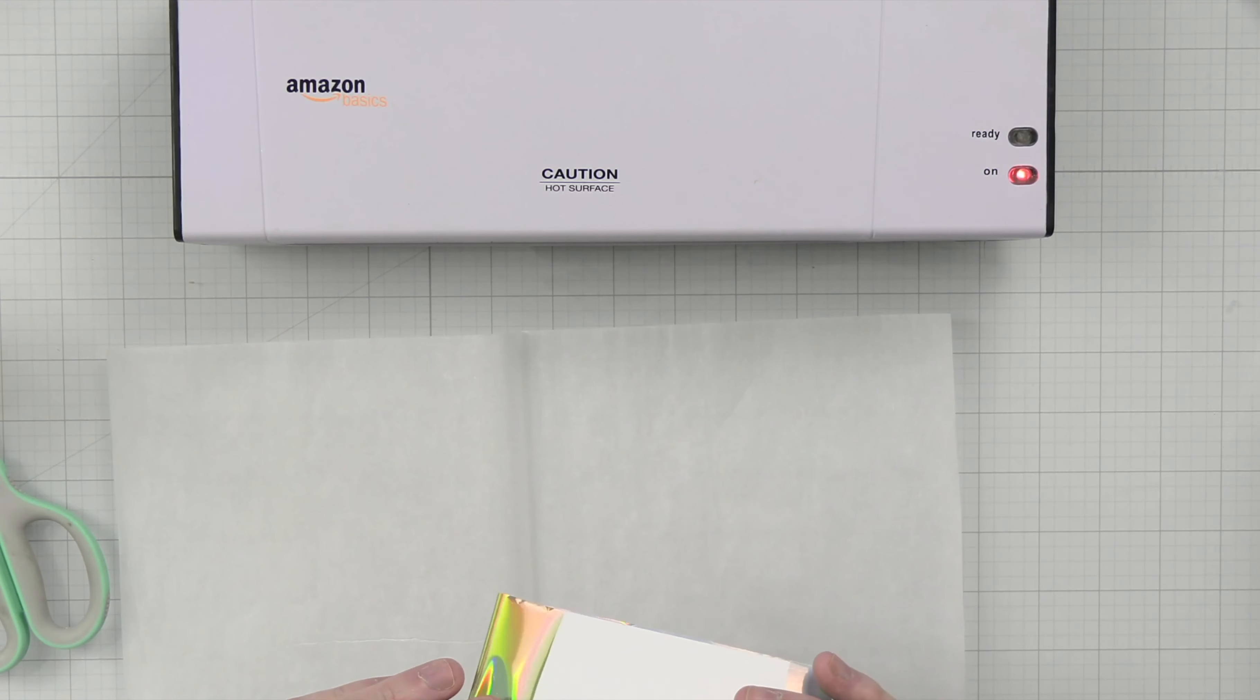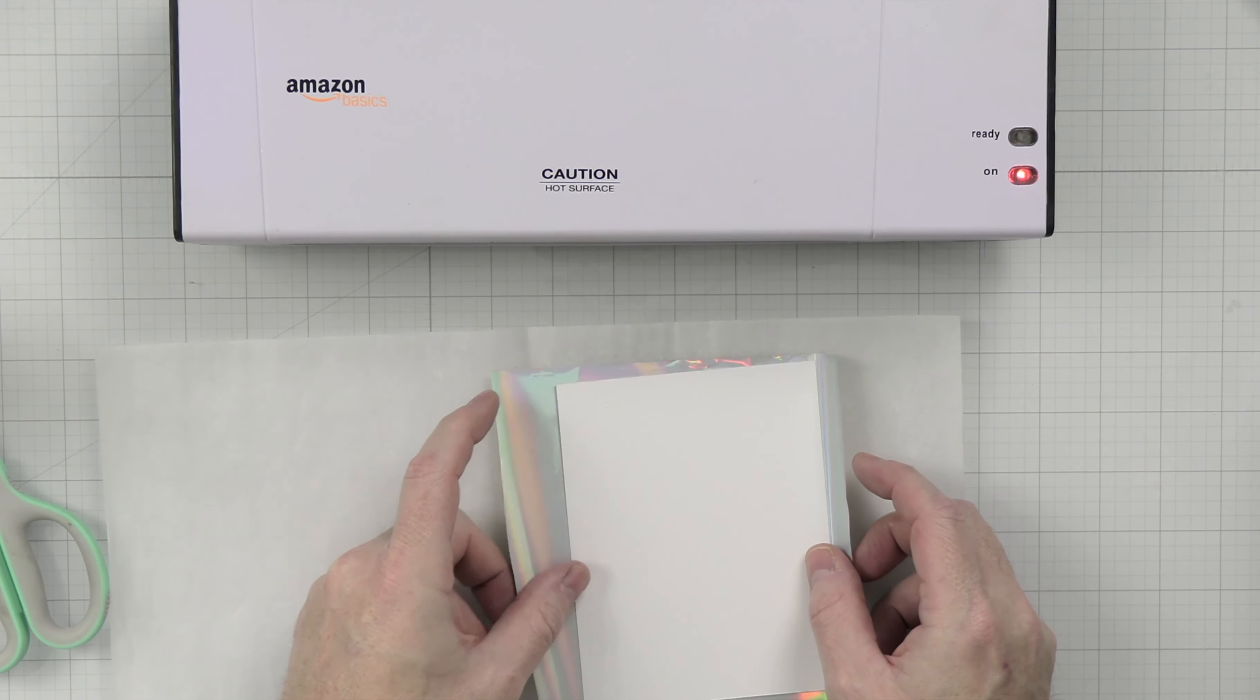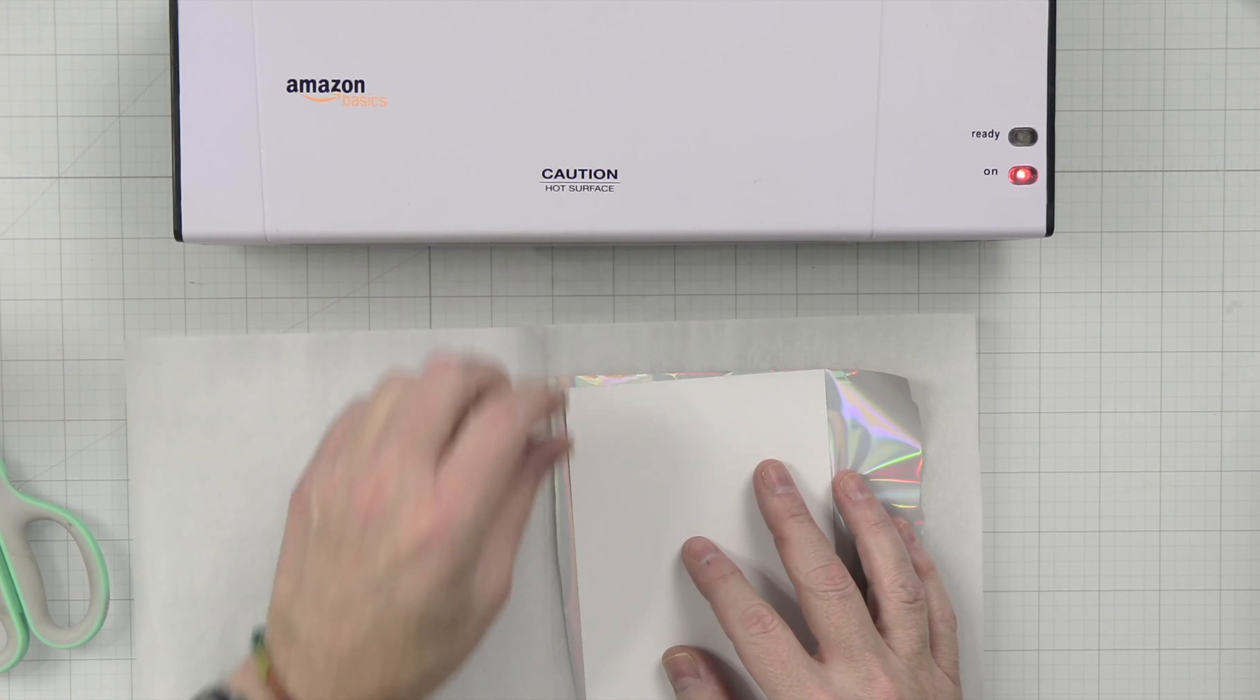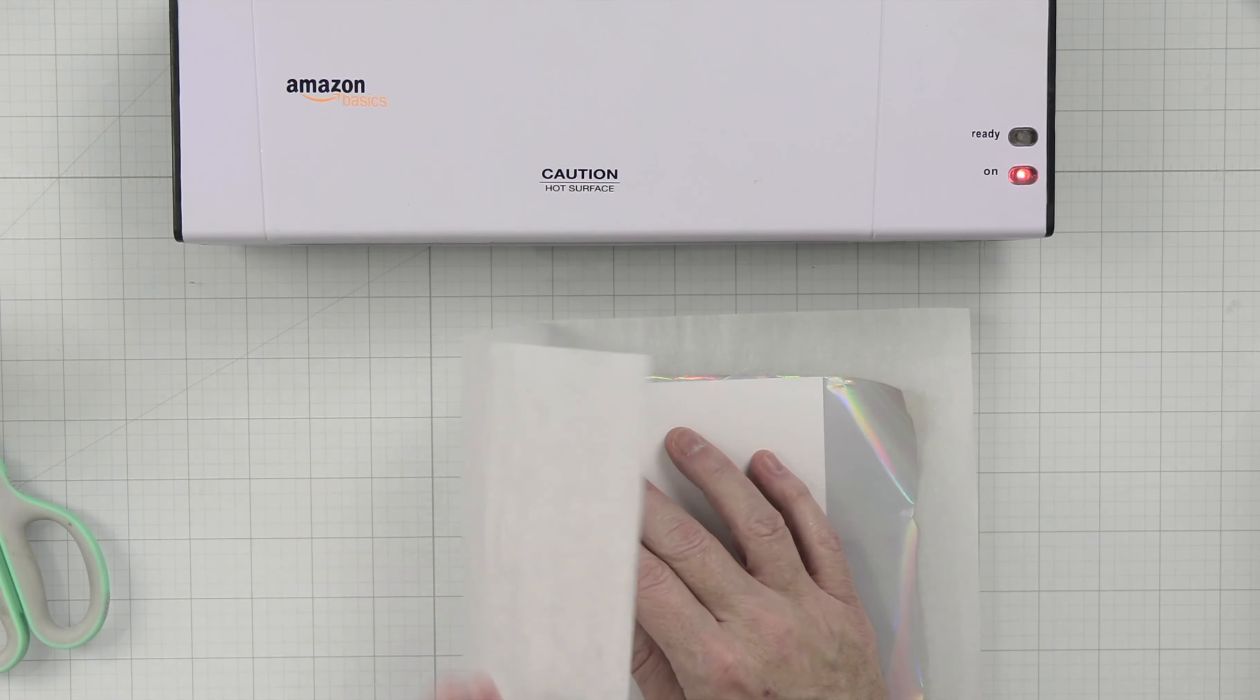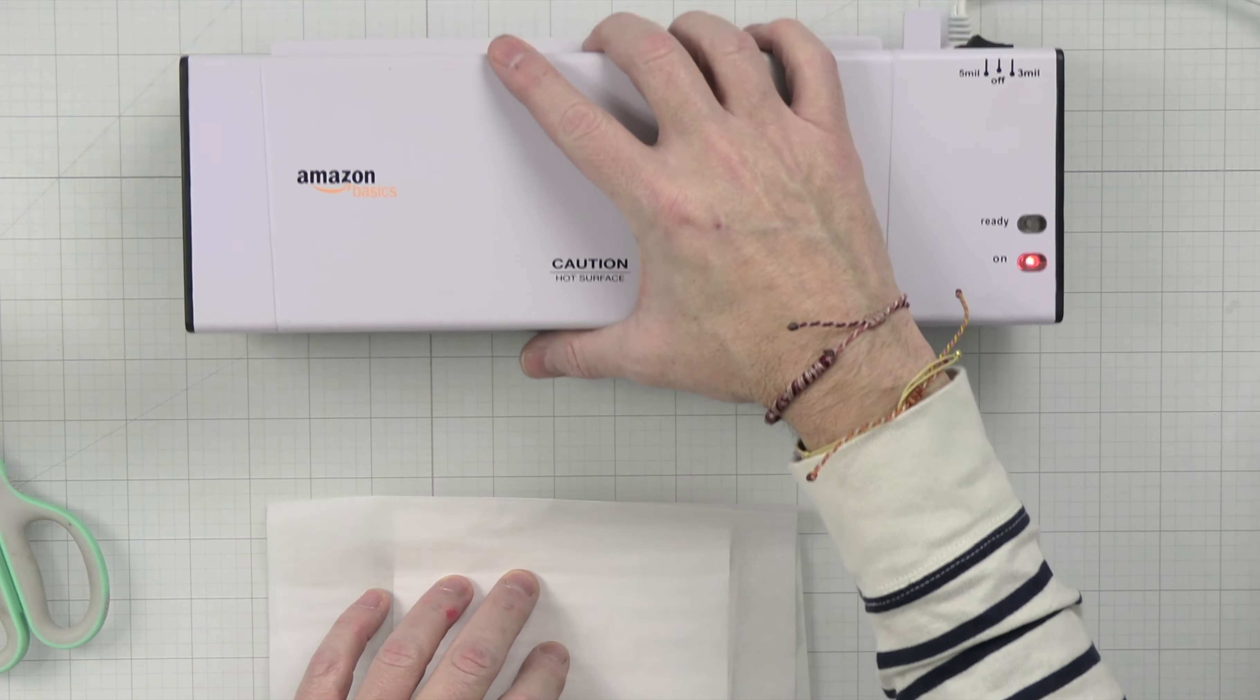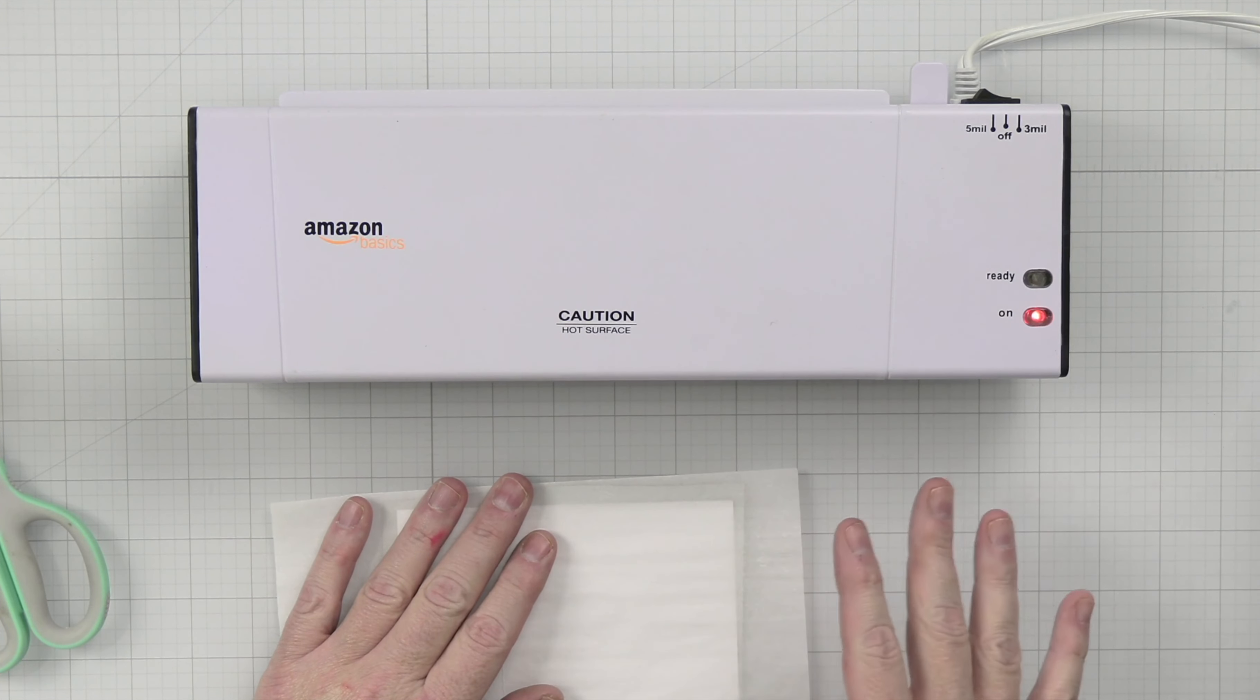Then put this down this way. It doesn't really matter which way you put it because it's going to go through. Then you just run it through the laminating machine when it's ready. So let's wait for that to happen. It should be getting pretty hot here in a second. I'll be right back once this is heated up and I'll show you as it goes through.